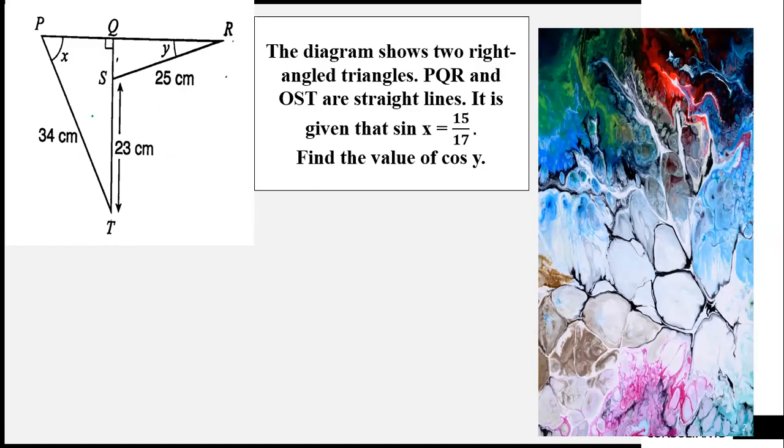sin x is equal to the opposite side divided by the hypotenuse side. So, sin x equals 15 over 17 equals the opposite side, line QT, divided by the hypotenuse side, line PT.